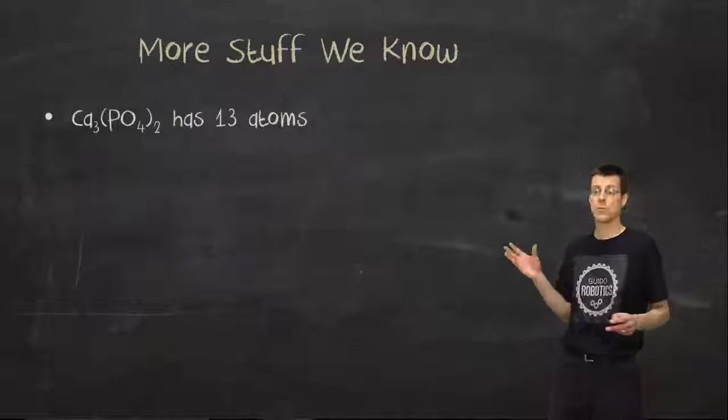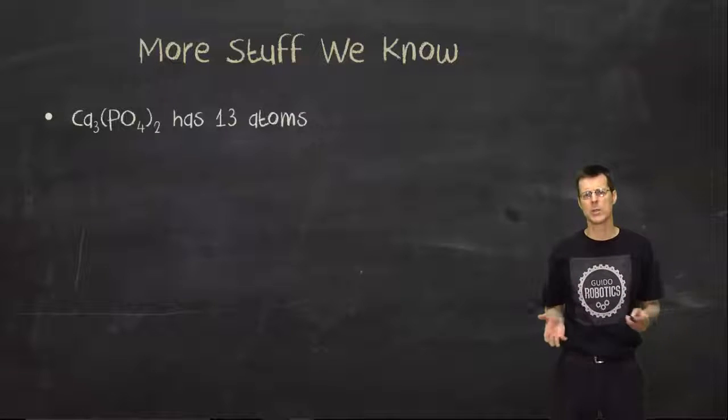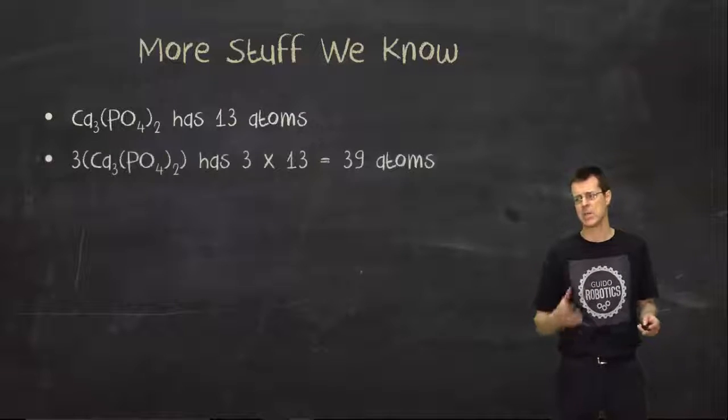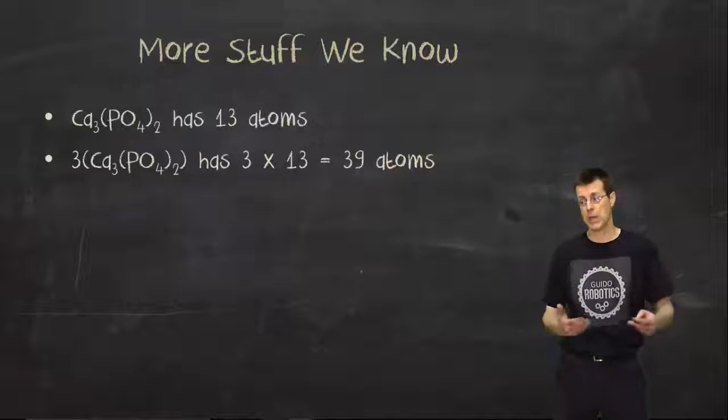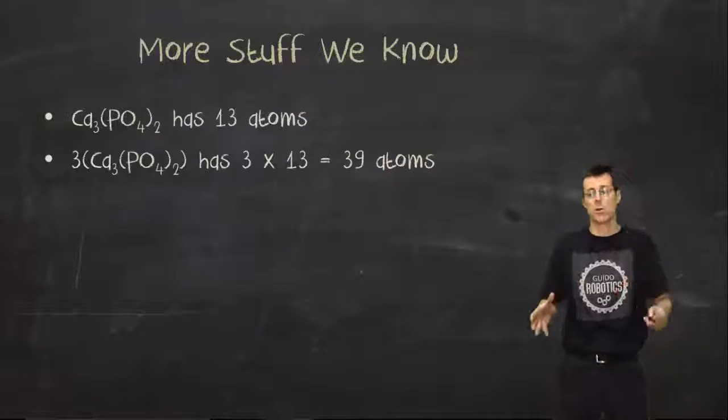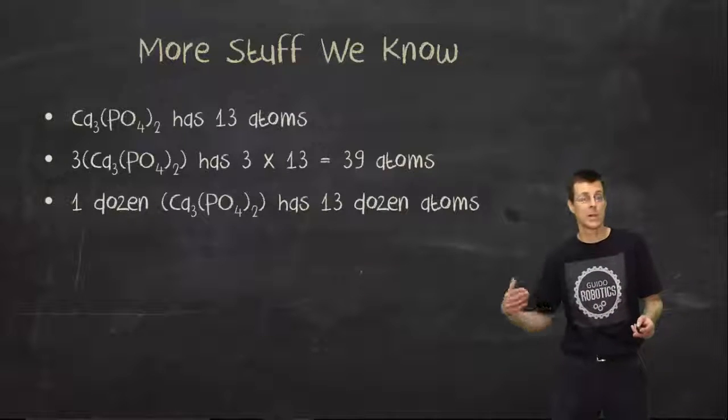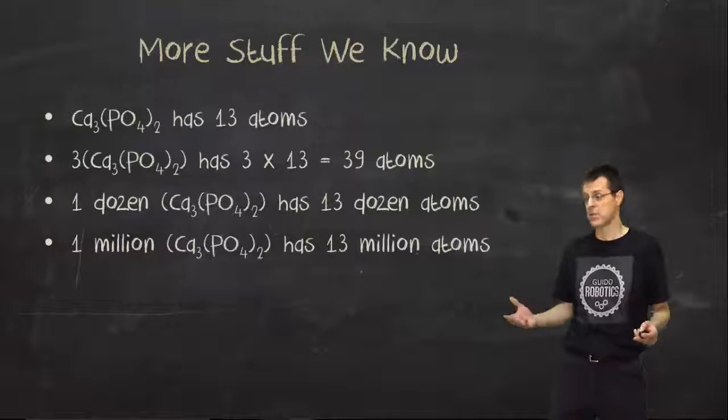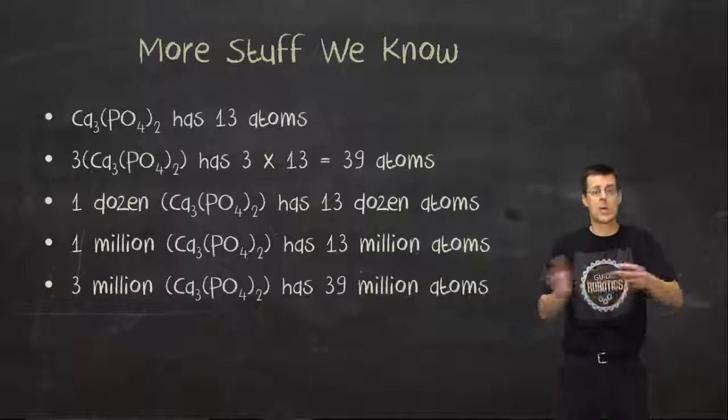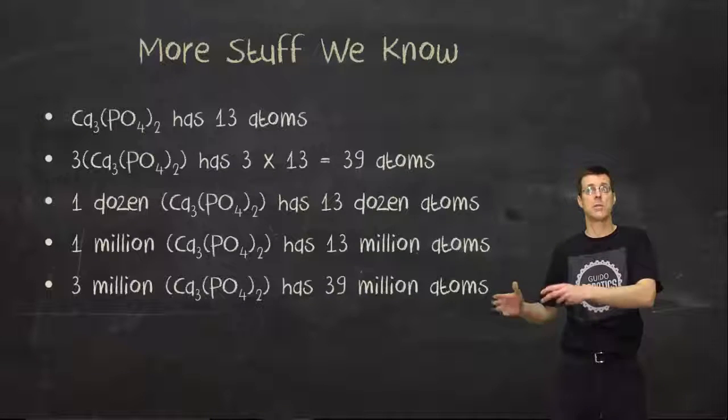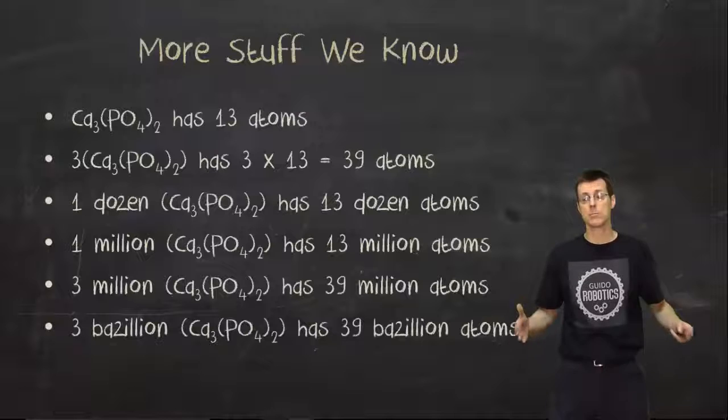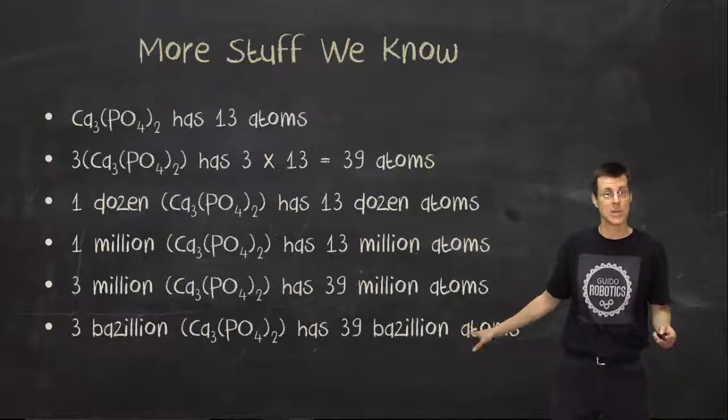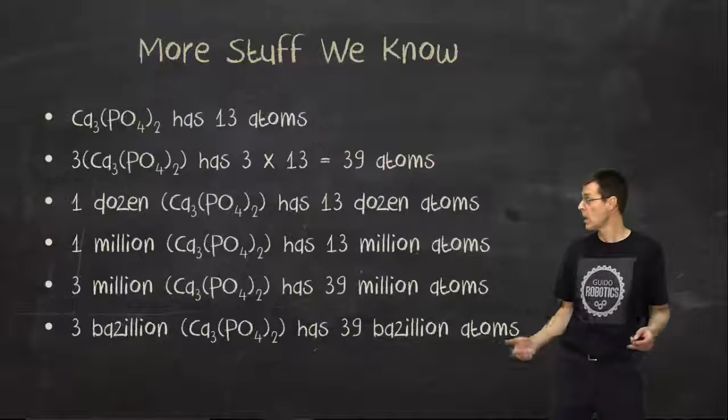The other things that we already know is what a chemical formula means. That chemical formula there has a total of 13 atoms. And if I had more of those particles with exactly the same formula, I could scale it up. In three of those particles, I would now have a total of 39 atoms because each particle has 13. If I had a dozen of those, I would have 13 dozen. If I had a million, I'd have 13 million. So hopefully you start following along what's going on. The pattern stays the same.